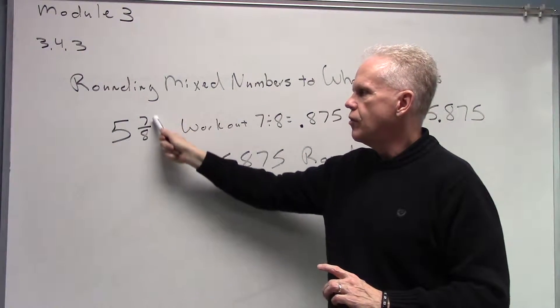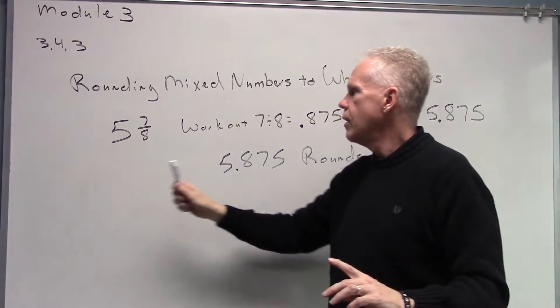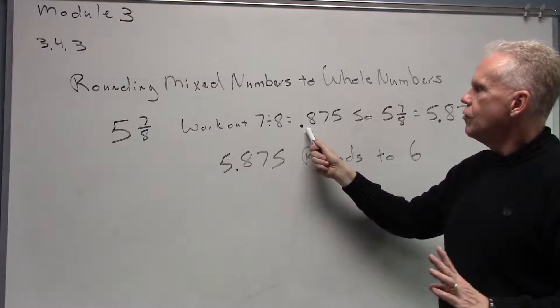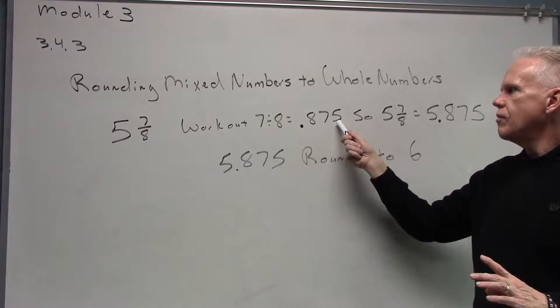is for you to pull your calculator and work out 7 divided by 8. You see you take your fraction piece here, forget about the 5 for a minute, work out 7 divided by 8. So the fraction piece is .875.